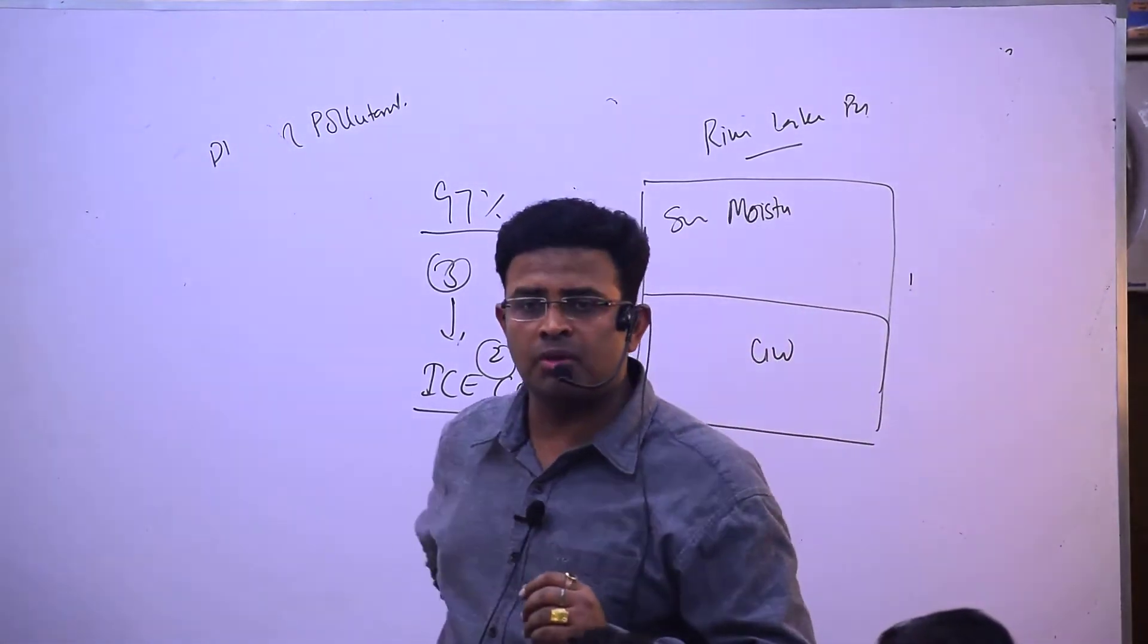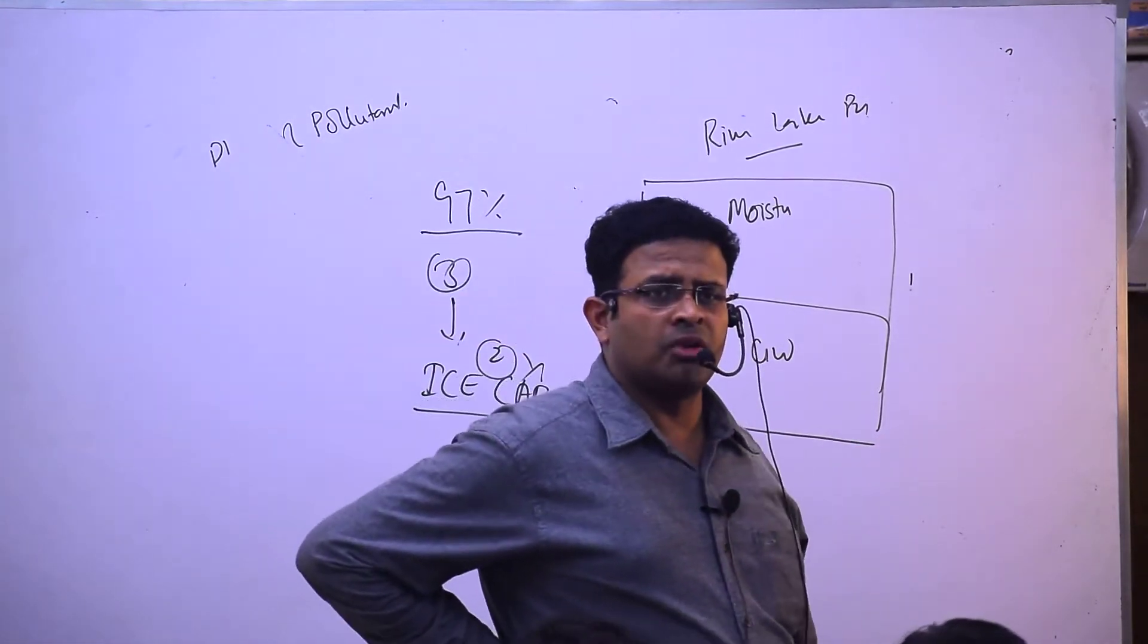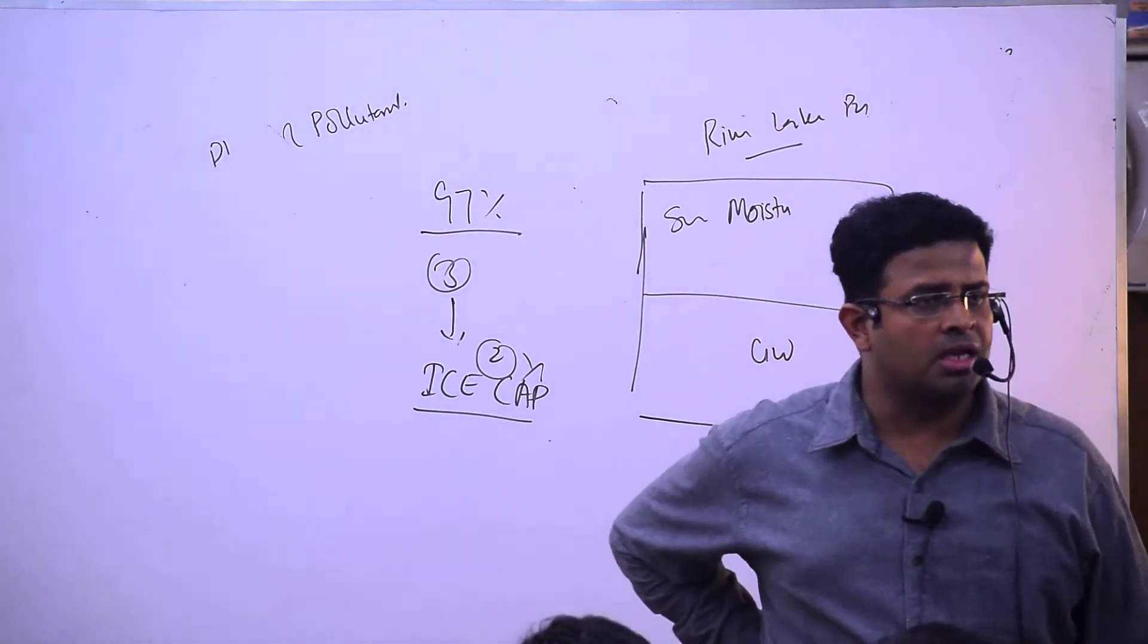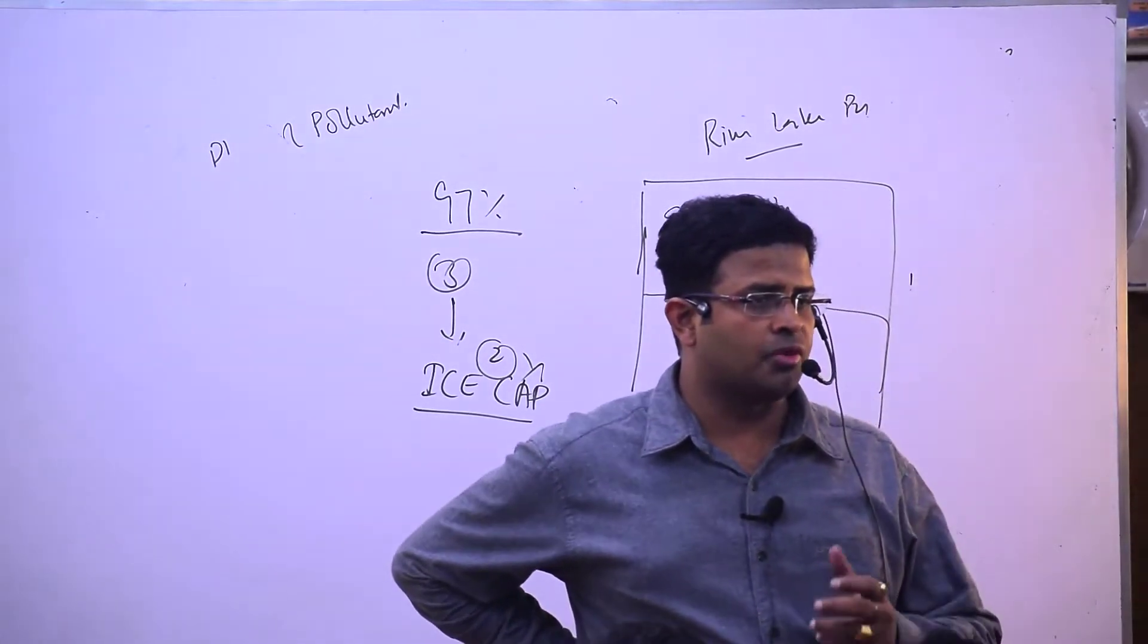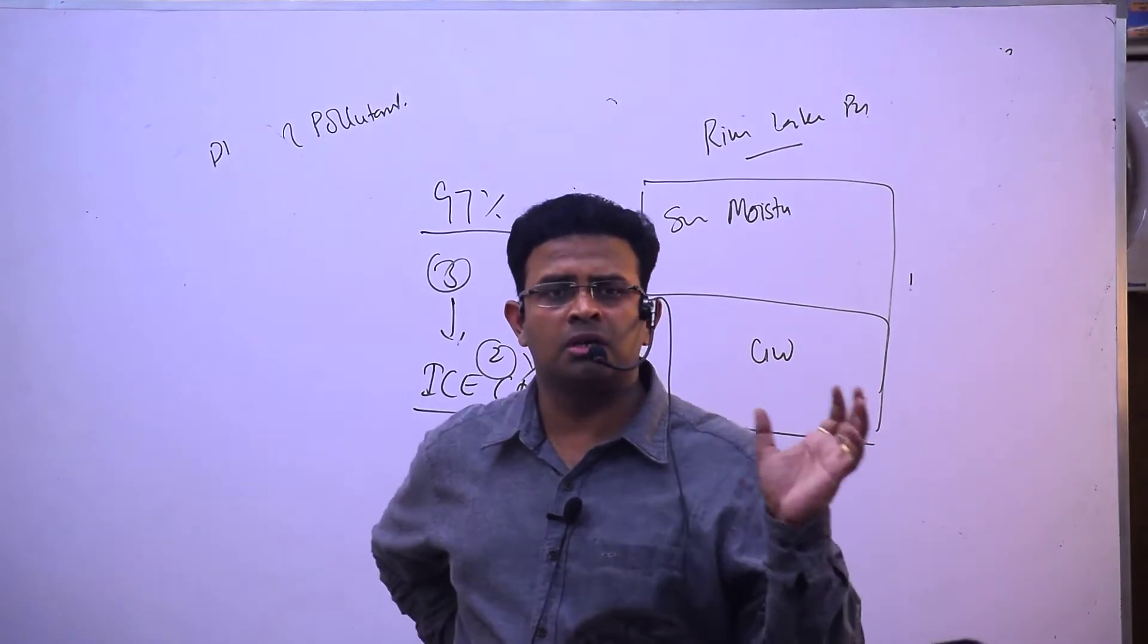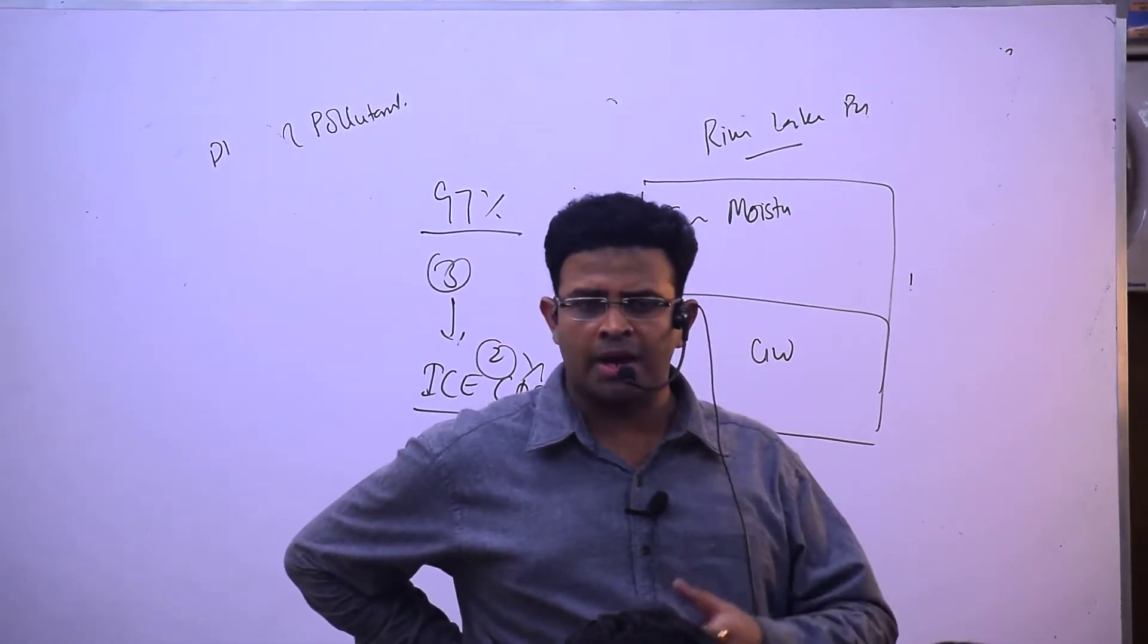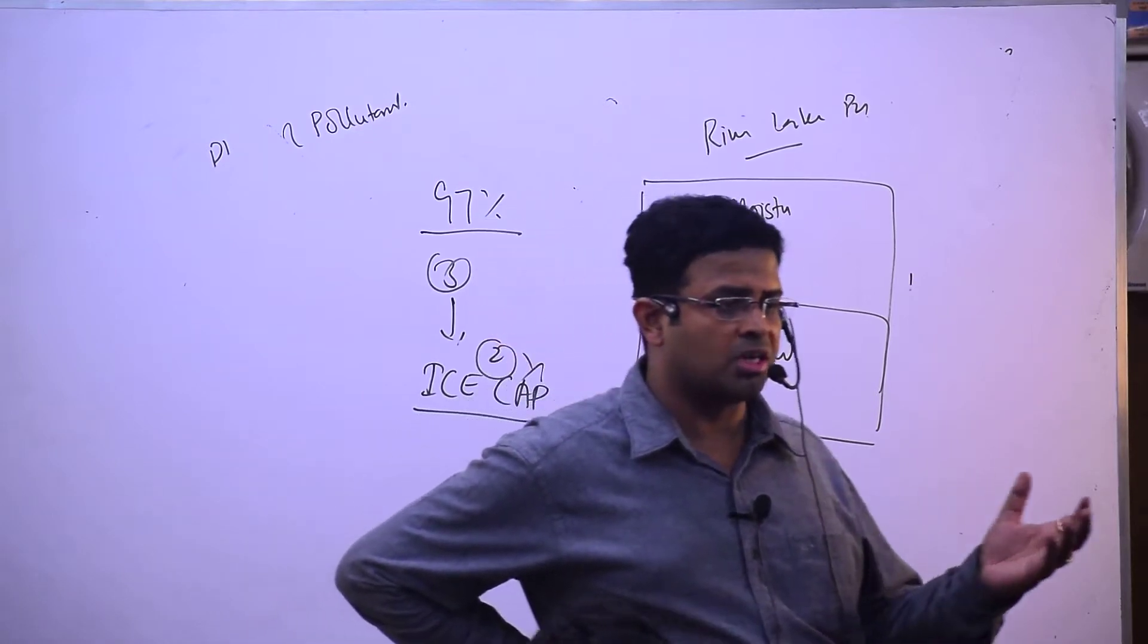Primary pollutants include carbon monoxide, carbon dioxide, and sulfur. Secondary pollutants come into existence after two primary pollutants react with each other under sunlight. Volatile organic compounds and hydrocarbons react with nitrogen oxides to give ozone.